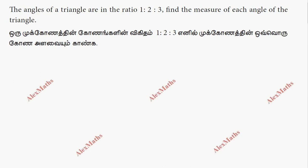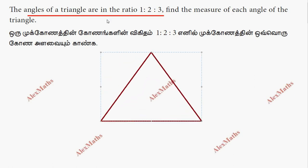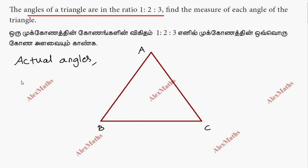Hi students, this is Alex here. In the problem, the angles of the triangle are in the ratio 1 is to 2 is to 3. For a triangle, when you go to angles in a ratio, the actual angle is important. So the actual angles are x, 2x, and 3x.